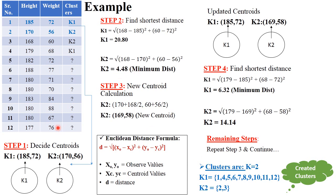After adding all 12 entries into their respective clusters, the final answer is: serial numbers 1, 4, 5, 6, 7, 8, 9, 10, 11, and 12 are added into the K1 cluster, and serial numbers 2 and 3 are added into the K2 cluster. In this way, two clusters are created as per this dataset.